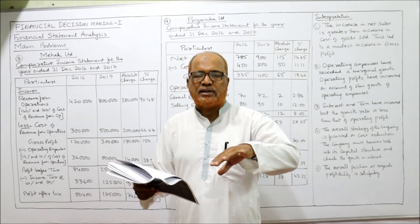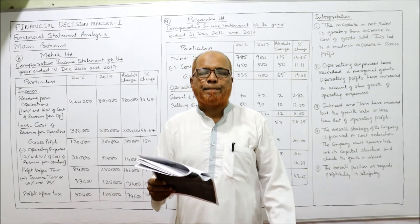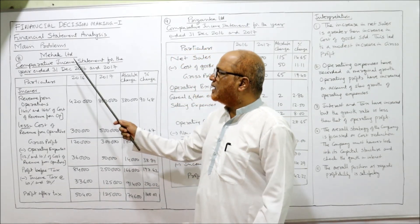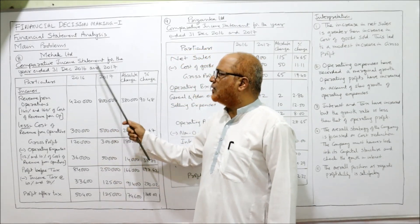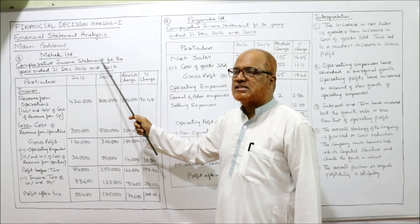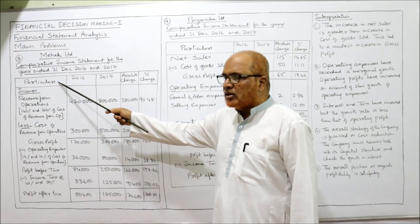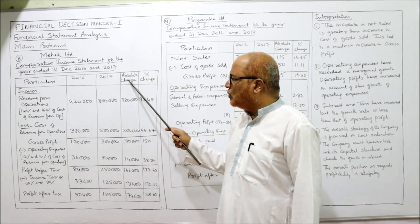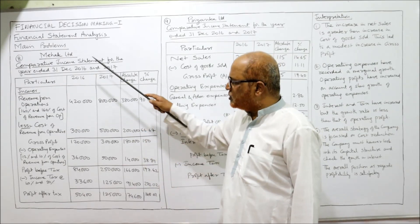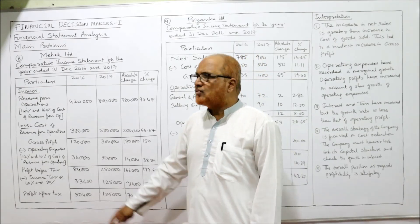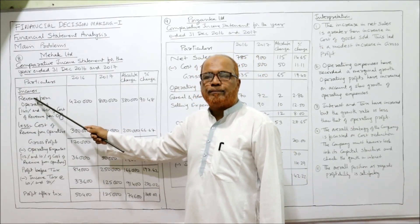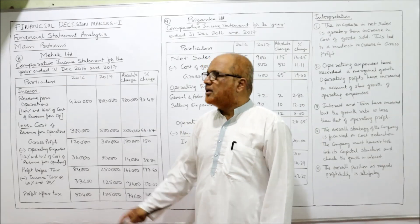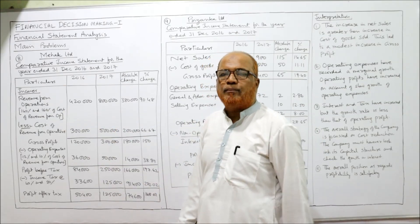This is all the information given for last year 2016 and current year 2017 regarding the income statement. Now see the solution: Mehaka Limited comparative income statement for the year ending 31st December 2016 and 2017. Columns are: particulars, 2016 last year, 2017 current year, absolute change, and percentage change. First we take the particulars — income will be from revenue from operations.